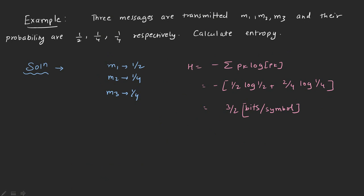Now let's go to an example. Three messages m1, m2, and m3 are transmitted with probabilities 1/2, 1/4, and 1/4 respectively. Calculate the entropy. You can pause and try it. The given information is: probability of m1 is 1/2, probability of m2 is 1/4, and probability of m3 is 1/4. We use the entropy formula: H equals summation from i equal to 1 to 3 of pi log to the base 2 of 1 by pi.